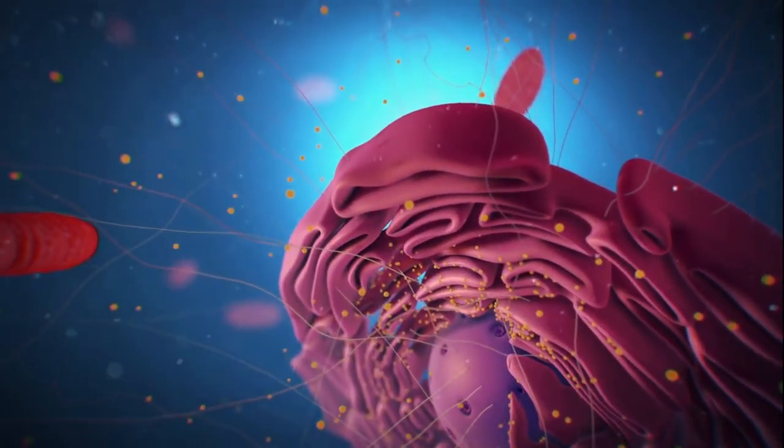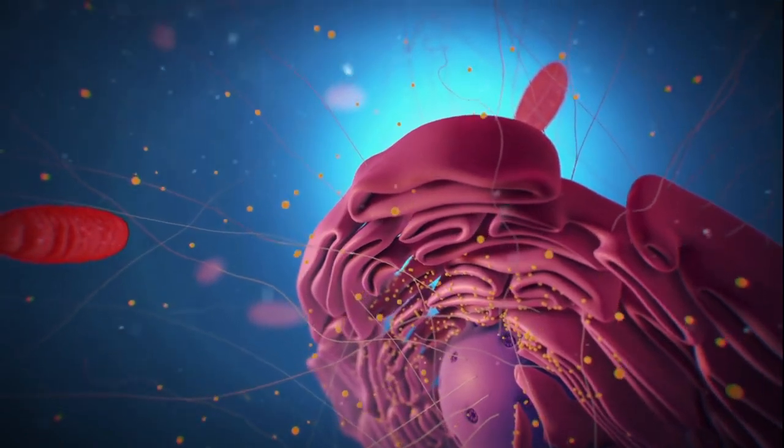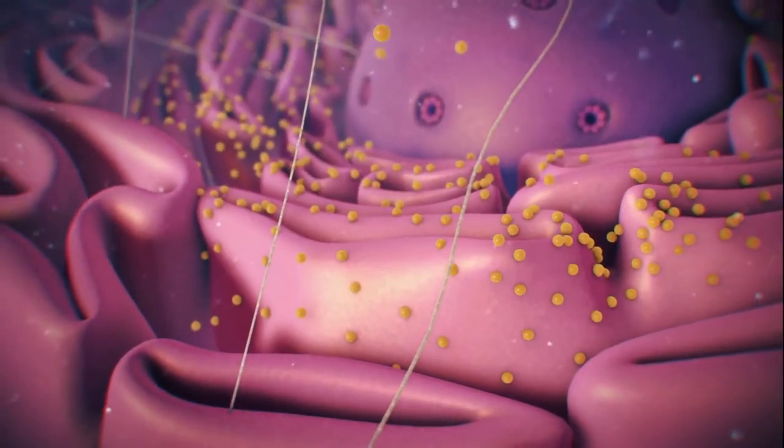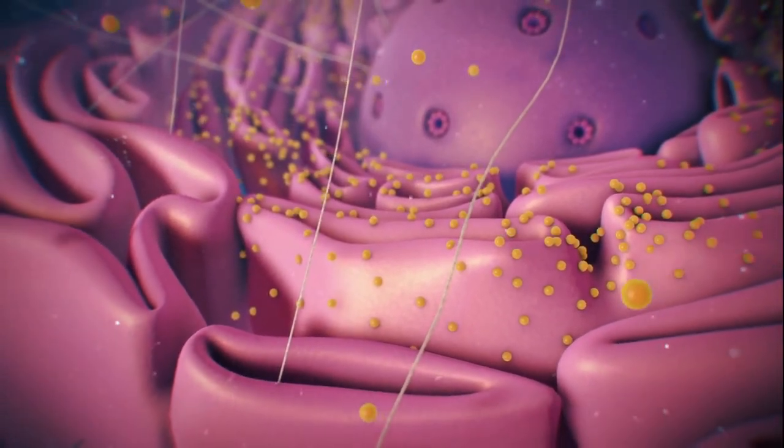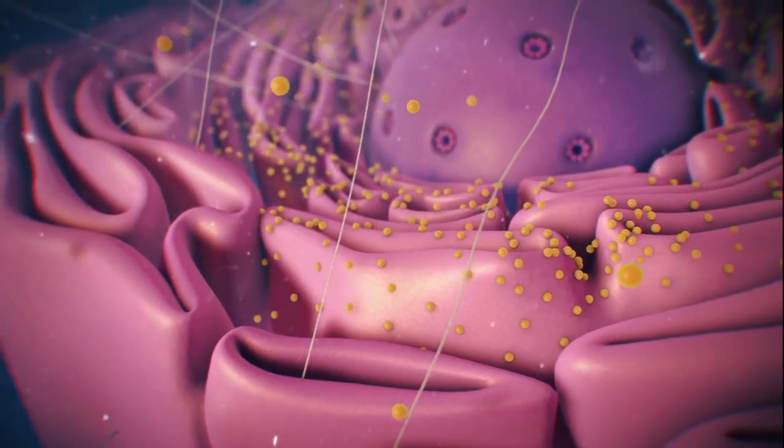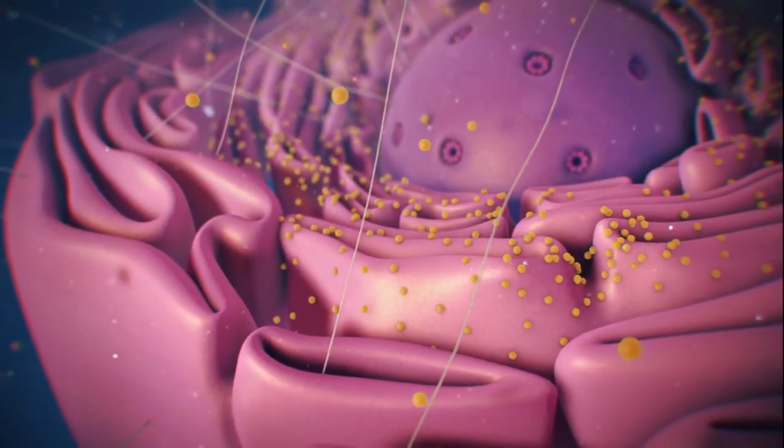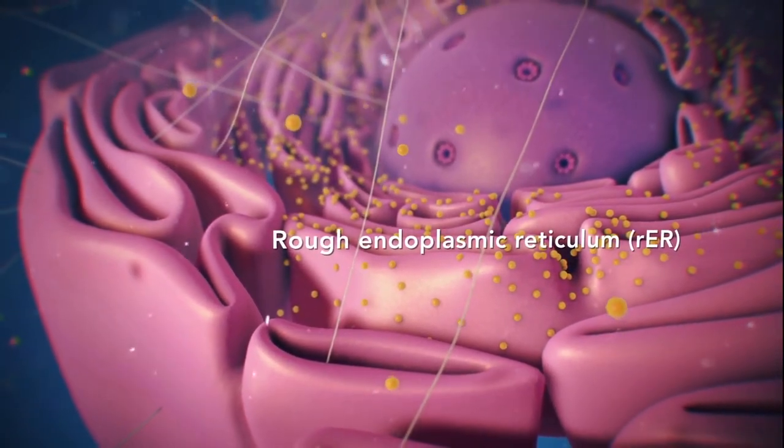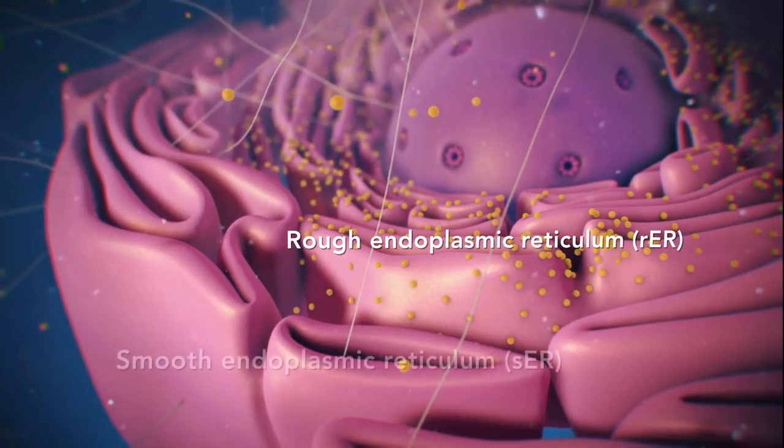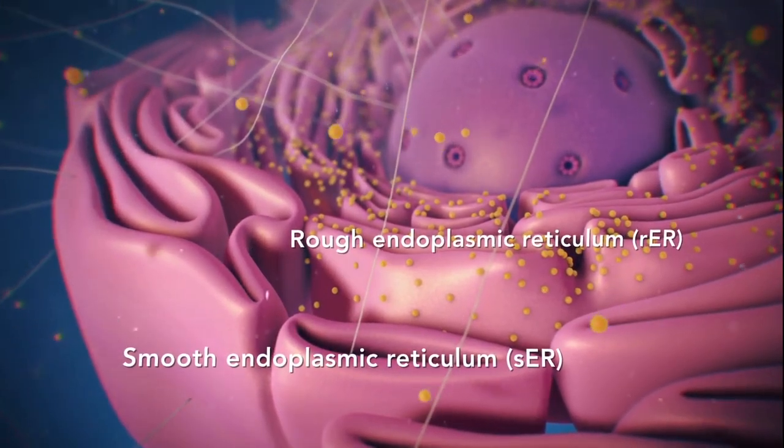Ribosomes may wander freely within the cytoplasm or attach to the endoplasmic reticulum, sometimes abbreviated as ER. There are two types of ER. Rough ER has ribosomes attached to it, and smooth ER doesn't have ribosomes attached to it.